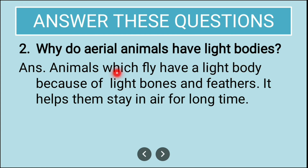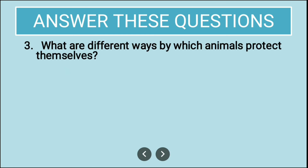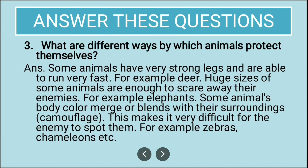Why do aerial animals have light bodies? Animals which fly have light bodies because of light bones and feathers, and this helps them to stay in the air for a long time.